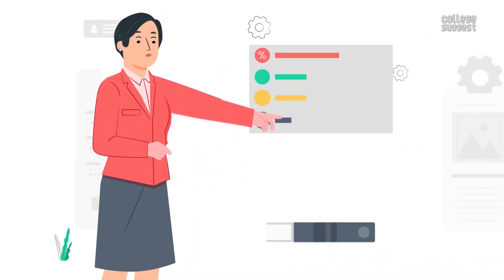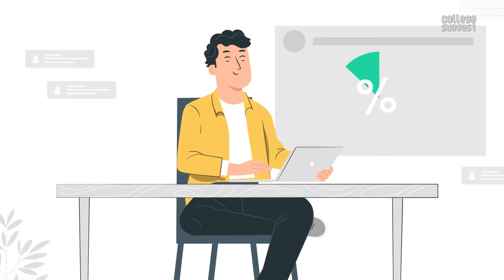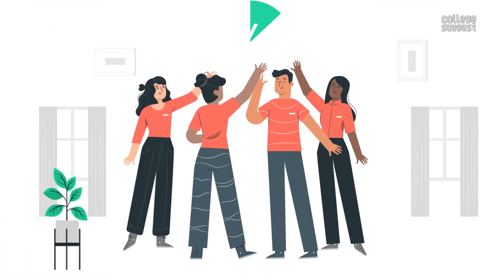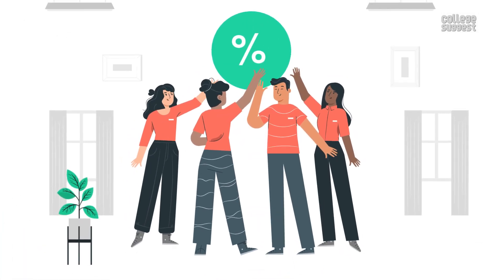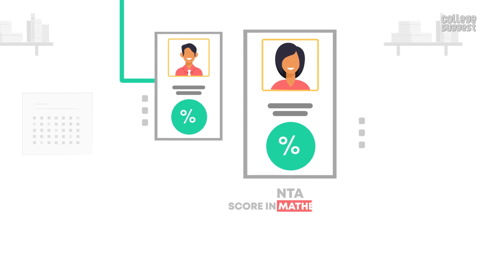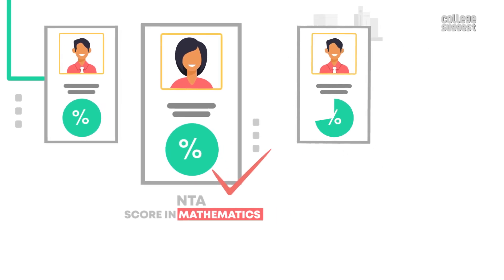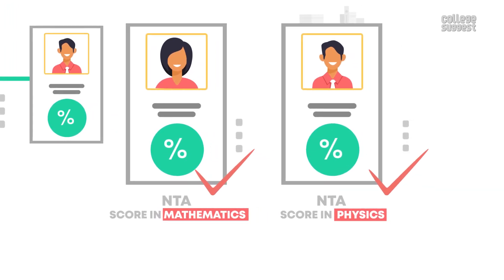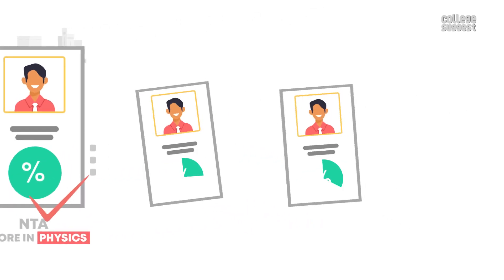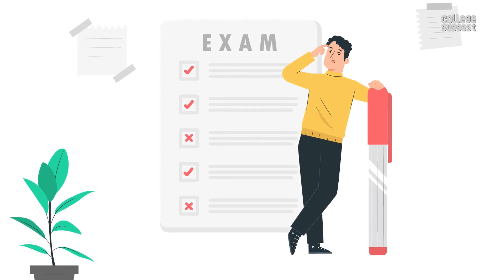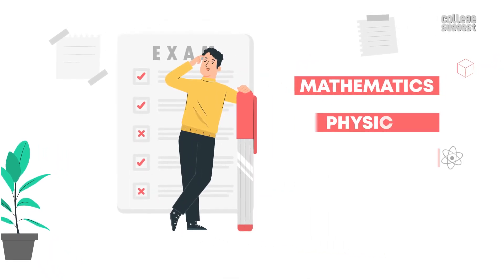The individual subject percentiles are used to determine the overall percentile scored by the candidate in each session. In case a bunch of students end up with the same percentile, this will be resolved in the following manner: the candidate with the highest NTA score in mathematics will be given a higher rank. If the tie still exists, the NTA score in physics will be used. If the tie still exists, the candidate with the higher NTA score in chemistry will be assigned a higher rank. Other methods to resolve this issue include checking those who have fewer wrong answers in mathematics, physics and chemistry.